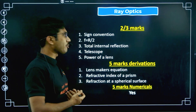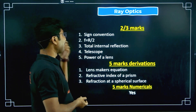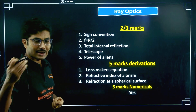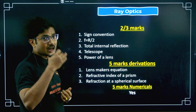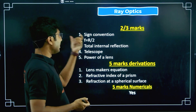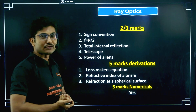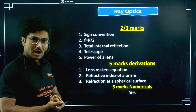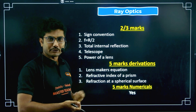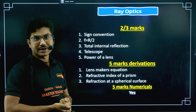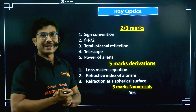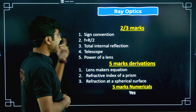Next is Ray Optics — a very important, high-weighted chapter. Sign convention: what is sign convention, short note on sign convention — a two-mark question. Derive that F equals R by 2 — another two-mark question. Conditions for total internal reflection and total internal reflection-based small numerical questions are also important from this chapter.